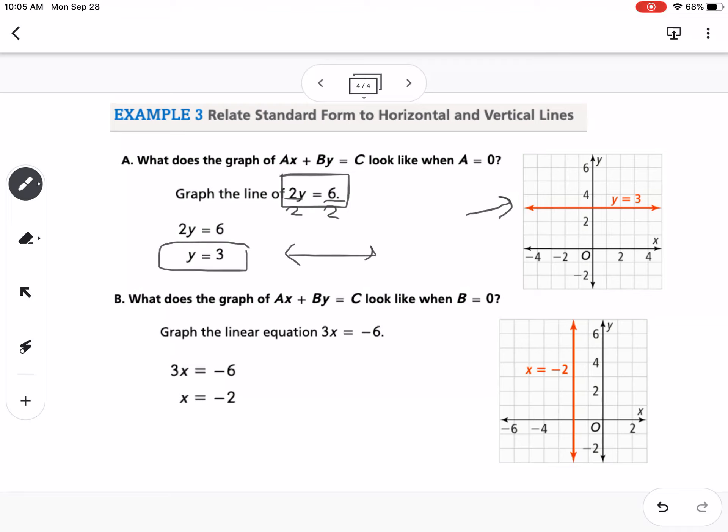Part B says, what does the graph of AX plus BY equals C look like when B is 0? We're going to look at the equation 3X equals negative 6. We can divide both sides by 3. So we get X equals negative 2. Anytime it's just an X, it's going to be a vertical line. You can see over here, my graph hits the X axis at negative 2 and is a vertical line.